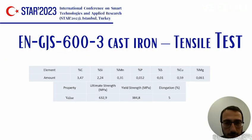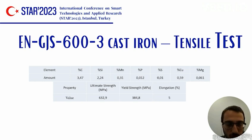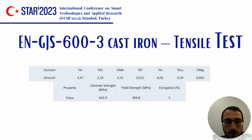The experiment has been conducted on ENGJS603 ductile iron, which is equivalent to GGG60 ductile iron. Here its chemical composition and tensile test results are shown, and the corresponding amounts and values are within the range of the ductile iron standard.